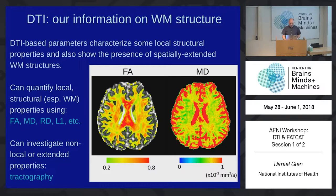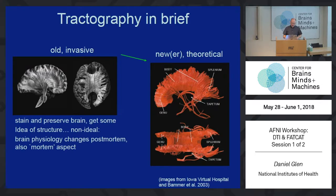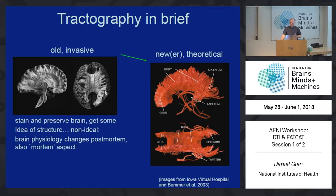We've seen the fractional anisotropy and the mean diffusivity. Before, to see white matter, you'd have to extract the whole brain and go through a lot of histology checks — it's fairly invasive. So hopefully we're trying to get to the point where we see really clear tractography like this.